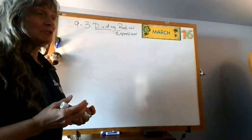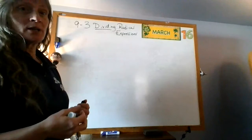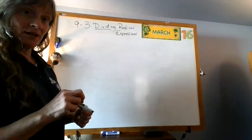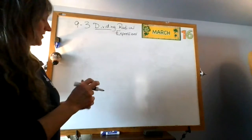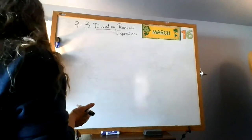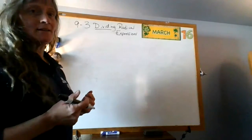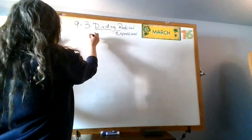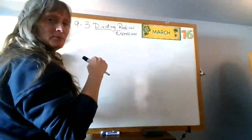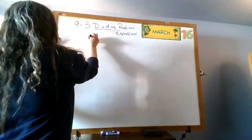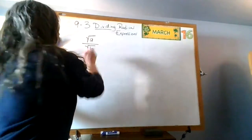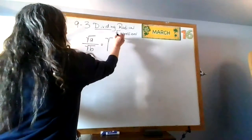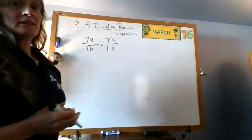Of course, this is nice because if you have not gotten this as quickly as we go and written it in your table of contents and on your page, then pause this, write it down, and then start it again. So, there's one main thing we need to know when we do this. I'm going to use letters — they're not supposed to be variables, just a way to show you this. The square root of A divided by the square root of B is the same as the square root of A divided by B.